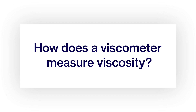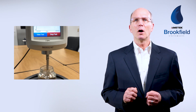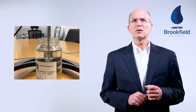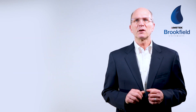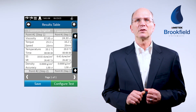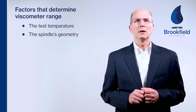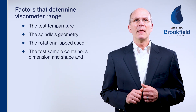Now, how does a viscometer measure viscosity? Viscosity measurements are done by attaching a spindle connected to the viscometer motor through a calibrated spring and rotating the spindle while immersed in the test sample. The viscous drag of the fluid against the spindle causes the calibrated spring to deflect — this deflection is known as percent torque. It is measured with a transducer where it gets converted electronically, and the test result is then displayed on the viscometer's LCD screen. The following factors determine the viscometer's measurement range: the test temperature, the spindle's geometry, the rotational speed used, the test sample container's dimensions and shape, and the viscometer's spring torque.